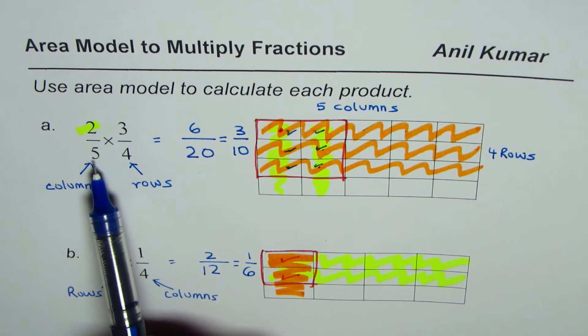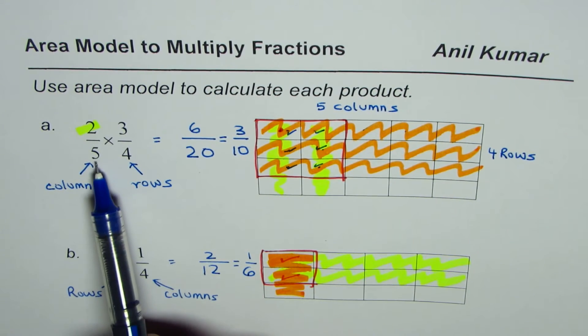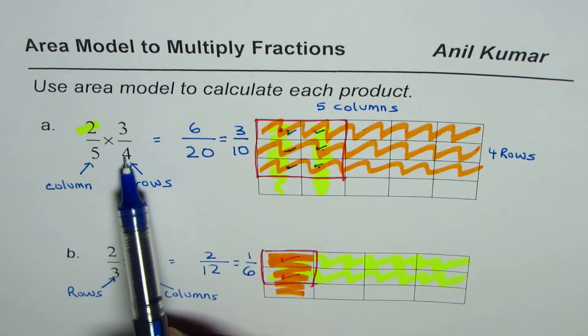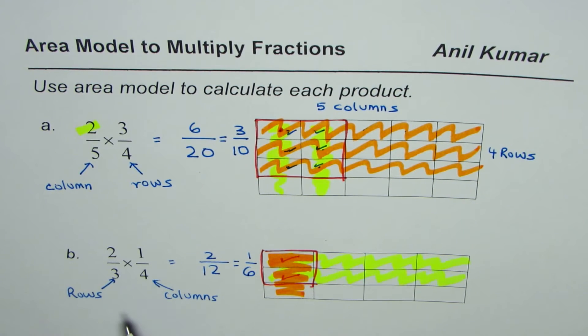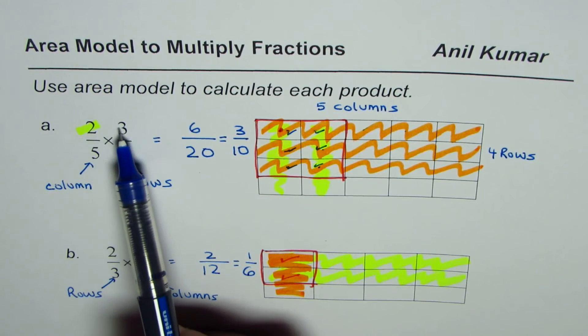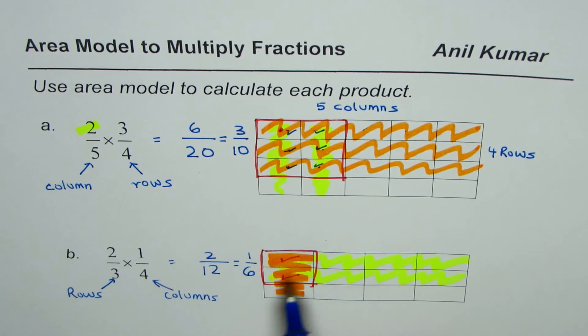I'm Anil Kumar and now let me summarize. When you multiply fractions make a rectangle with rows and columns similar to the denominators. So if you have denominator as five and four we could have five columns and four rows. We could also have five rows and four columns as we had in the next example.